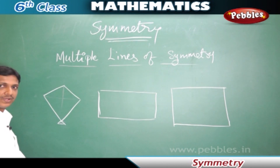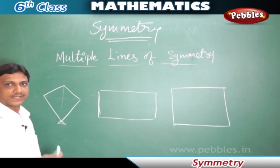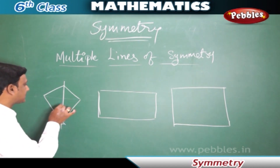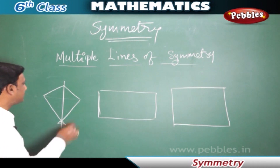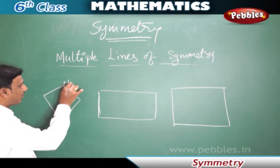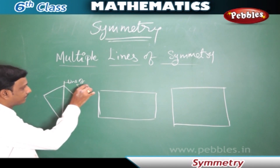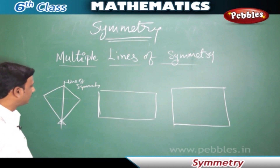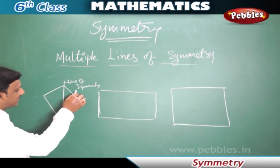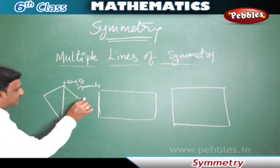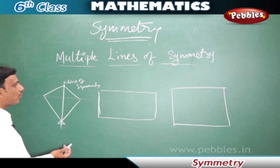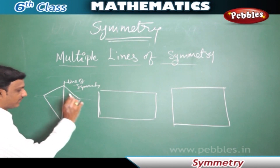Here we have a kite shape. We can make a kite shape using a set square. If we draw a vertical line like this, we can make this kite shape into two identical parts — we find a line symmetry, and this is the line of symmetry of this figure. But is there any possibility to draw another line of symmetry? If we draw a horizontal line, we cannot find two identical parts, so there is only one line of symmetry for this figure.